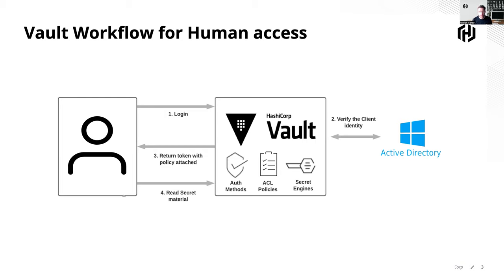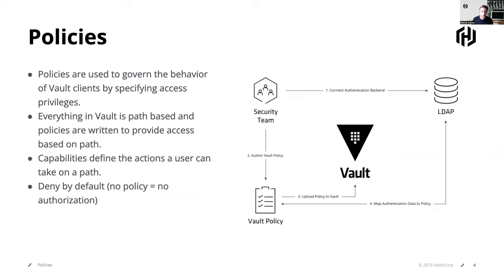Now, the important thing is that as part of that token, Vault's going to include one or more policies. These policies are the authorization mechanism within Vault that control what that user can do. Vault operates on the principle of least privilege. So if I can authenticate with Vault and I don't have any policies, I really can't do anything — I can't create secrets, I can't write secrets. It's really limited access.